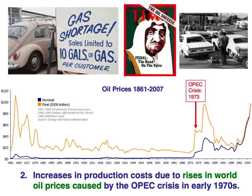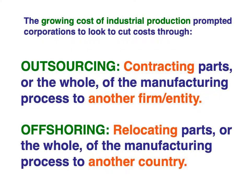Not only did labor cost more, but increased oil prices also raised production costs. This gradual increase led to a transformation in the manufacturing process. As a result, companies started looking at outsourcing and offshoring. People use these terms interchangeably, but they are slightly different. You can outsource without having to offshore, but you cannot offshore without outsourcing. Outsourcing is when you contract part of the manufacturing process to another company — that company can be down the road or in a different country.